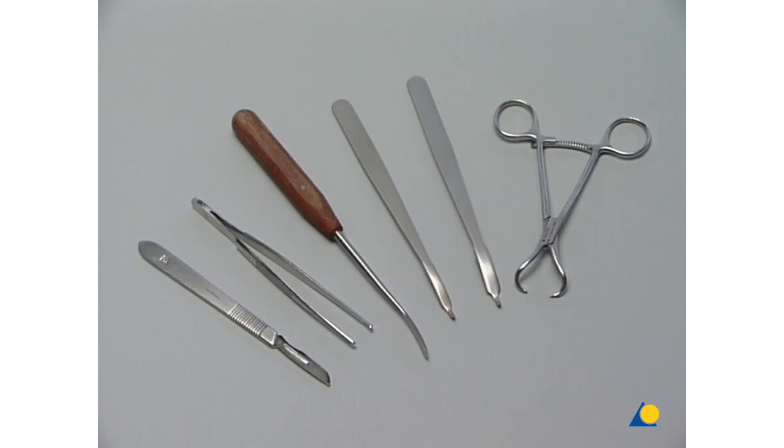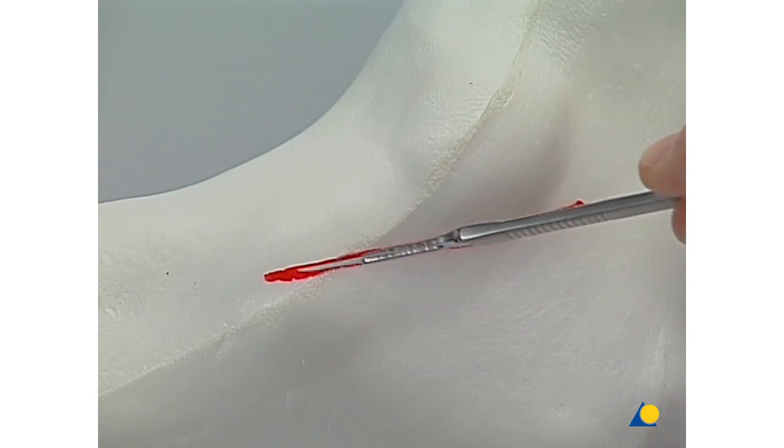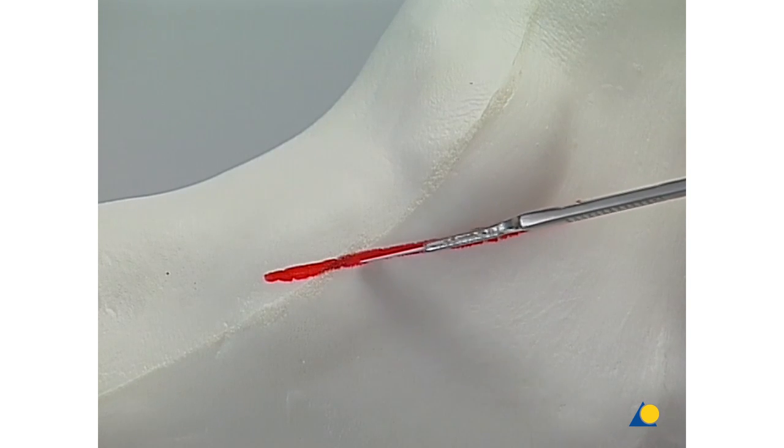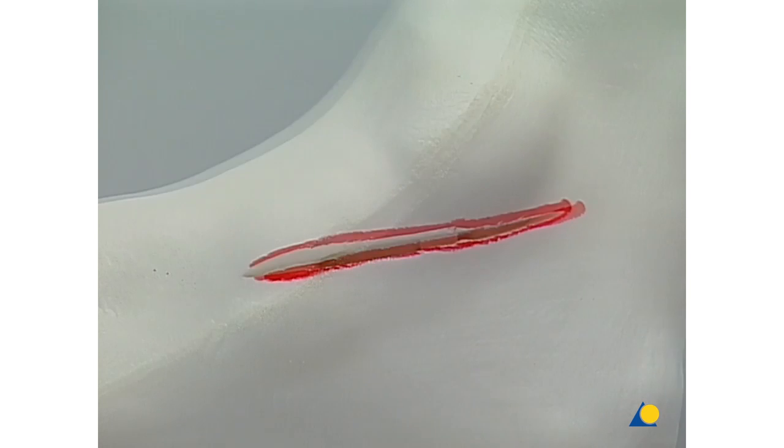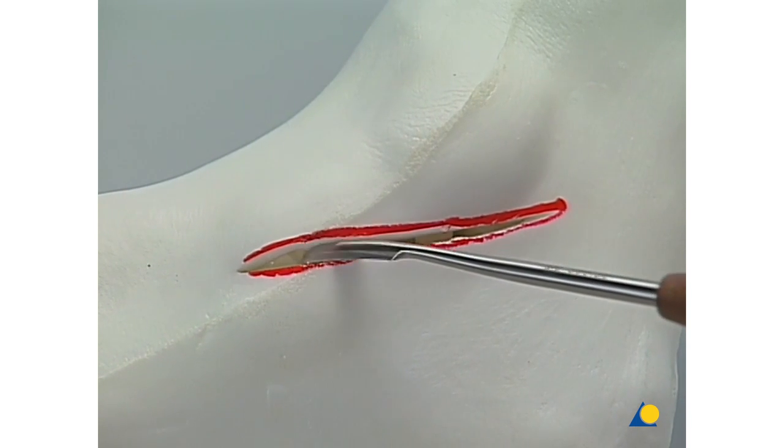For the incision and the reduction of the fragments we need this selection of instruments. The incision is made at a right angle to the skin and straight down to the bone. Soft tissue is released using the small periosteal elevator.